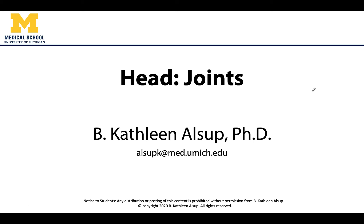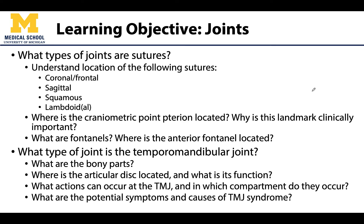Hello anatomy colleagues, this is Dr. Alsup. In this video we're going to take a lot of that osteology we just learned regarding the head and talk about the specific joints. There are really two main types of joints in the head: the immovable sutures and the temporomandibular joint, which is a synovial joint.